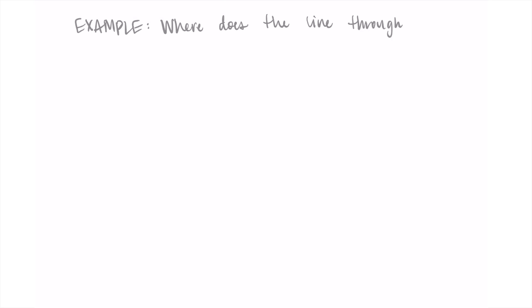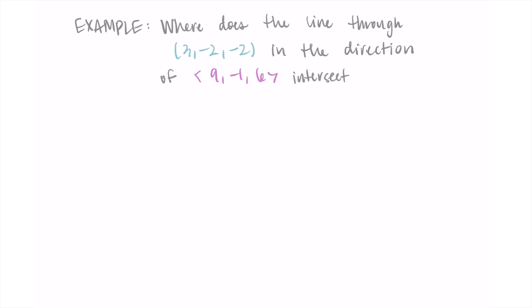For the next example, we want to know where the line through the point (3, -2, -2) in the direction of the vector (9, -1, 6) intersects the xy-plane. I'm given a point and a direction, so I'll need to find the equation of the line first, then determine where it intersects the xy-plane. Pause here if you'd like to try it.